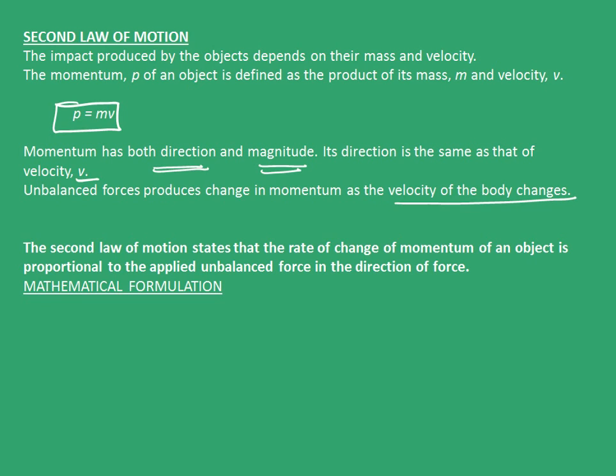The second law of motion states that the rate of change of momentum of an object is proportional to the applied unbalanced force in the direction of force. That is, p2 minus p1 upon t is proportional to force, where p2 is the final momentum, p1 is the initial momentum, and t is the time taken in change of this momentum. Now, let us mathematically formulate second law of motion.